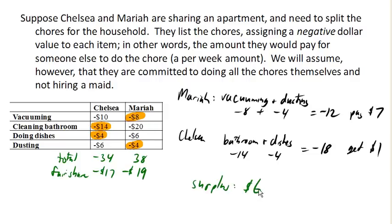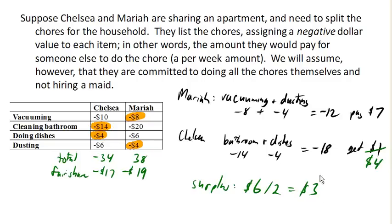We'll divvy that surplus up by 2, so each person gets an extra 3 dollars. In our final allocation, Chelsea is still going to do the bathroom and the dishes, but she's going to get 4 dollars a week. Mariah got 3 dollars back, so instead of paying 7 dollars, she's only gonna have to pay 4 dollars a week — to compensate for the difference in badness. Mariah is going to pay 4 dollars a week to Chelsea because she's doing stuff that's worse.